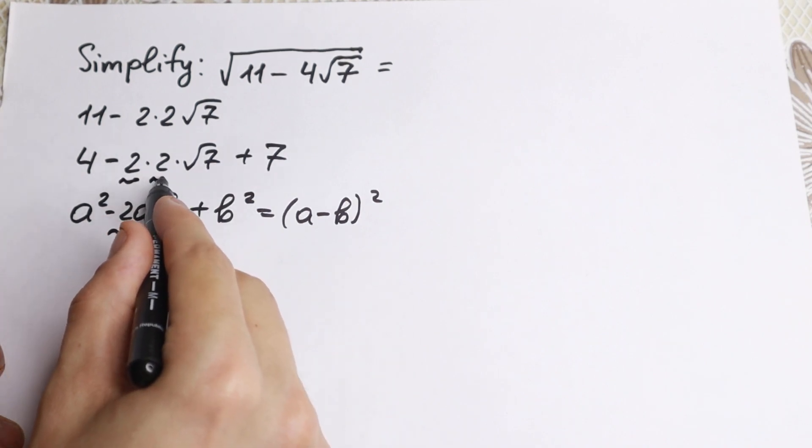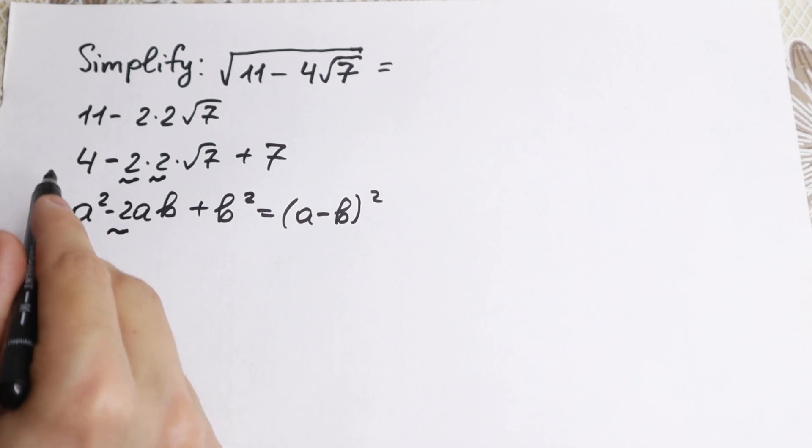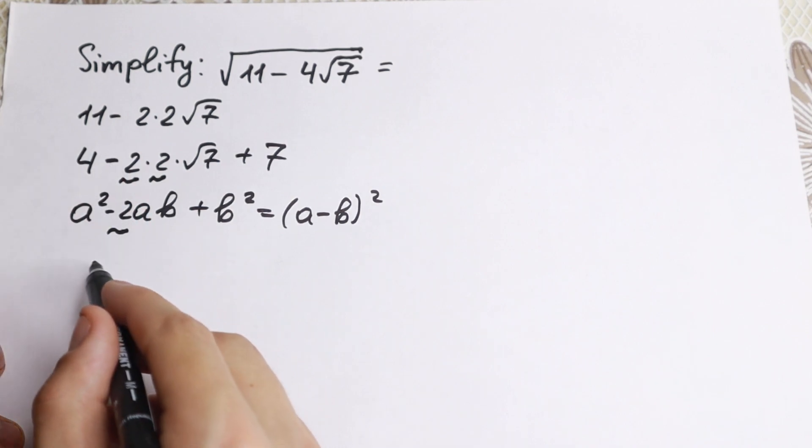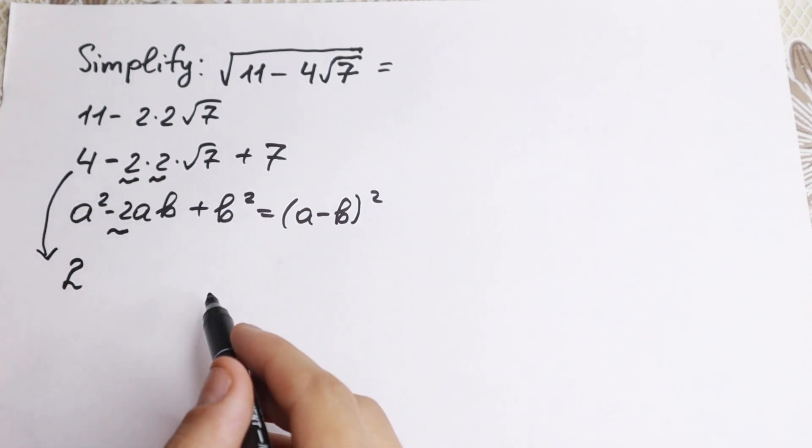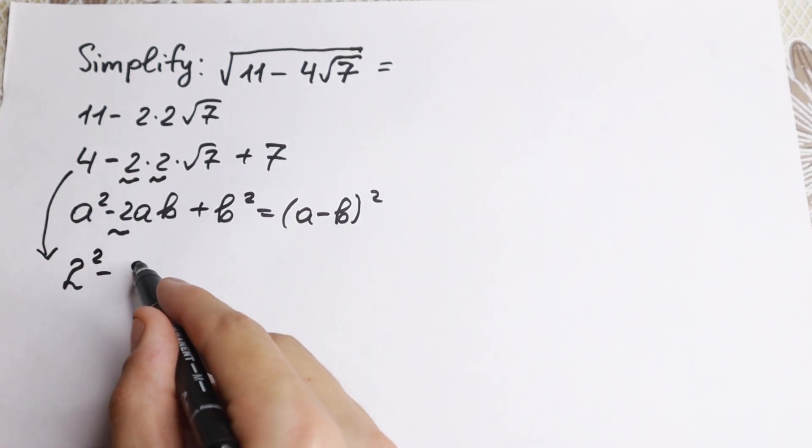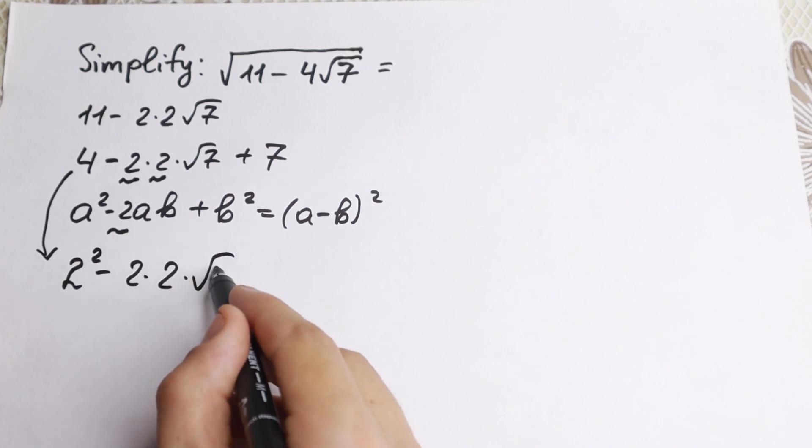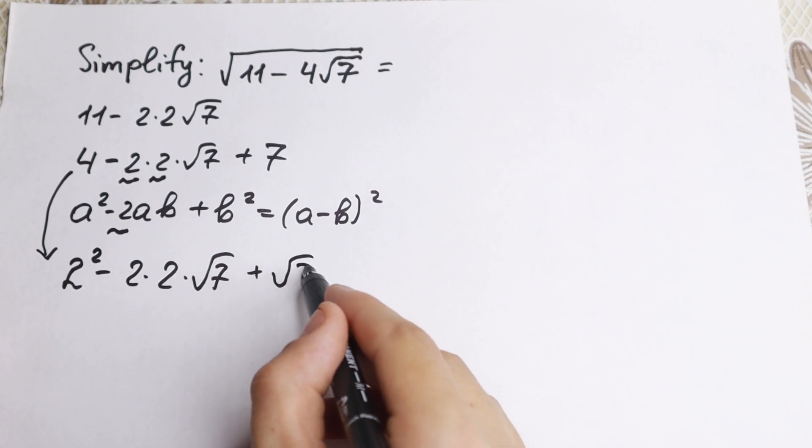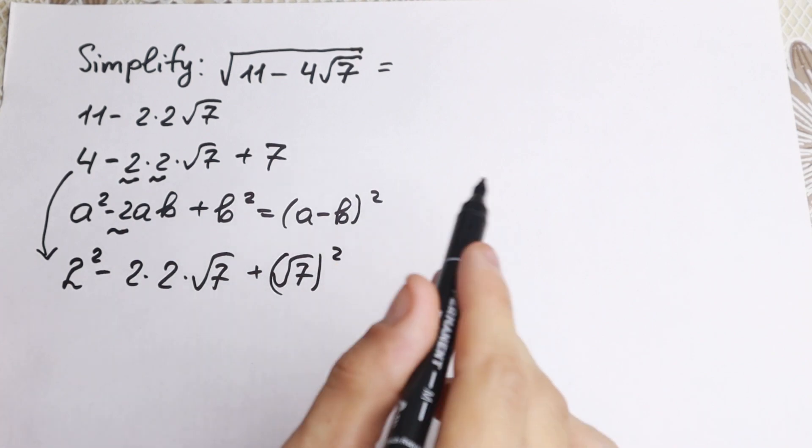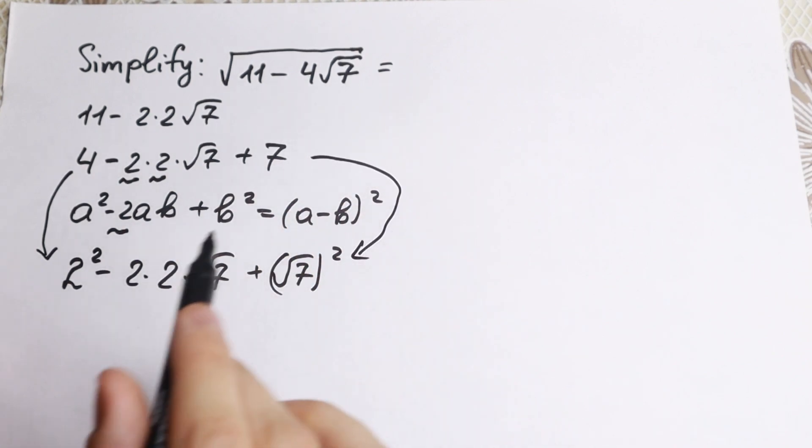If we write this a squared as 2 squared, we have 2 squared minus 2 times 2 times square root of 7, and I want to write this 7 as plus square root of 7 squared. So this is the same 7 as right here, but I write it in this way.